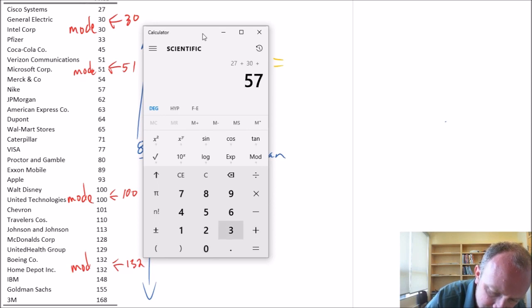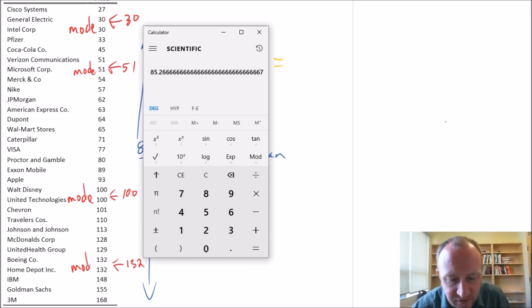[Adding all values: 27, 30, 30, 54, 57, 62, 63, 64, 65, 71... continuing through all 30 observations... 129, 132, 132, 148, 155, 168]. So 2558 is the numerator divided by 30 equals 85.26.